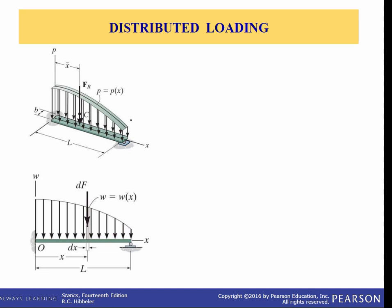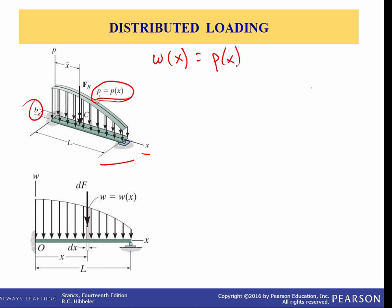The most common type of loading in engineering practice can be represented along a single axis. For example, look at this beam here. It has a constant width B and is subjected to a pressure loading that varies only along the x-axis. That pressure loading is denoted by this function P, so that's a pressure which changes as x changes. It only contains one variable x, so we can also represent it as a coplanar distributed load.